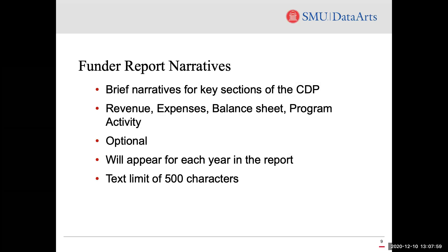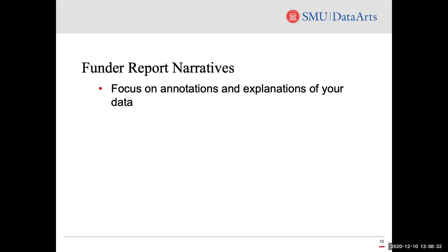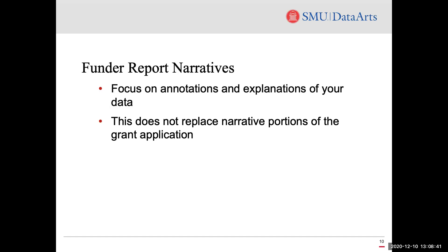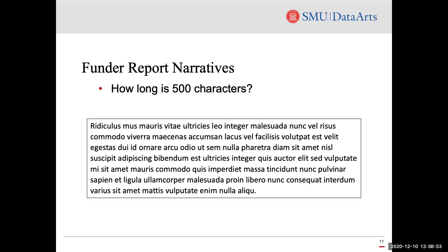These are brief narrative fields that appear at the end of key sections of the data profile — specifically in the revenue, expense, balance sheet, and program activity sections. Each narrative section is optional, but if you do add information, the narratives will appear in your funder reports to all funders and for each year in the funder report. There is also a character limitation of 500 characters. The narrative fields are intended as annotations and explanations of the data in your report — not to replace any additional narrative portions for your grants. We encourage users to stay focused on explanations of the data within the fields. The text shown on screen is 500 characters, just to give you an example of how long these narratives could possibly be.